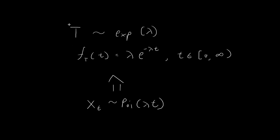In this video, I'm going to show you how we can arrive at the exponential distribution starting from a Poisson process. A Poisson process can be imagined as a random variable X indexed by t, which follows the Poisson distribution with parameter λt. You can think of X_t as modeling the probability of the number of events occurring within a time period.